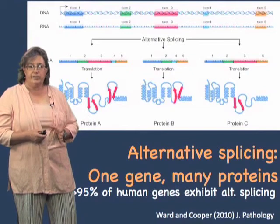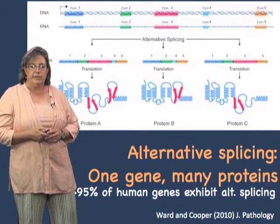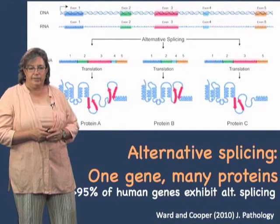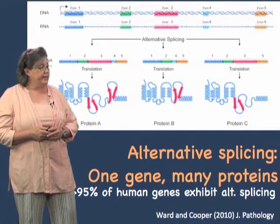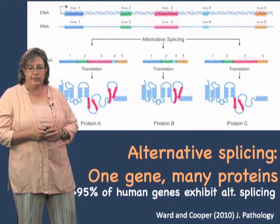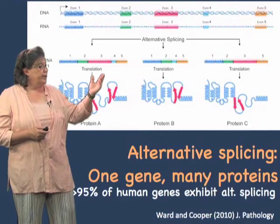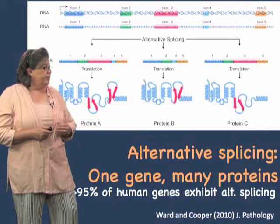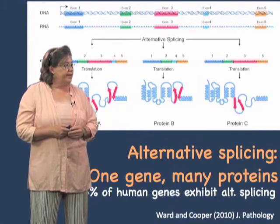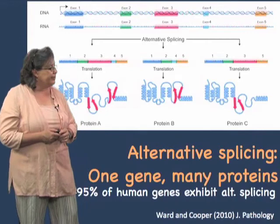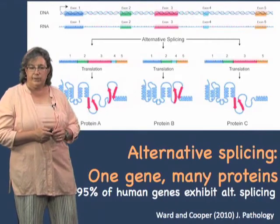Eukaryotes, in addition to having split genes, defy the original central dogma of biology — we may have one gene, but one gene can make many, many proteins. For example, here is one gene where if all exons are spliced in, it makes one protein. But if the red exon is left out, it makes a different protein. And if exon 4, the blue exon, is left out, that makes yet a third protein. So on this particular gene, there are three proteins coming from one gene.